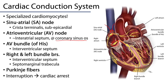Depolarizations from the AV node affect the atrioventricular bundle, which is at the superior margin of the muscular interventricular septum. The atrioventricular bundle, often called the bundle of His, branches into two bundle branches — a right and a left bundle branch — which are conducted along the margins of the muscular interventricular septum.